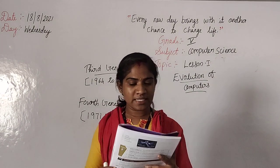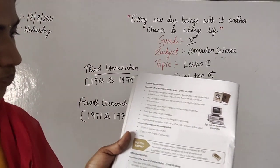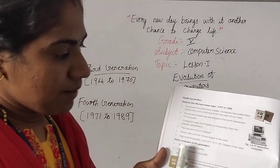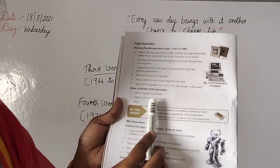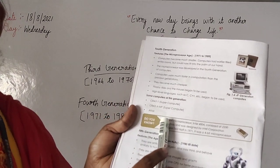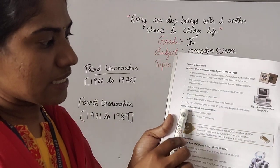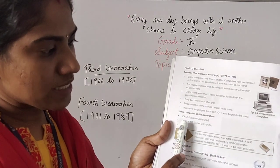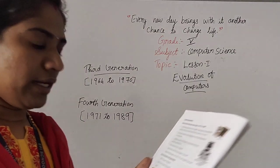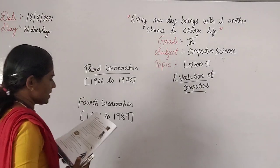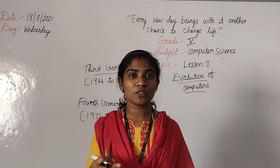Some computers of this generation: Cray-1, that is a supercomputer, then Cray XMP, also a supercomputer — high-speed, high-quality computers. These are some computers of fourth generation: Cray-1 and Cray XMP, both supercomputers. Hope you can understand.